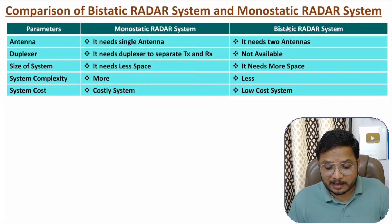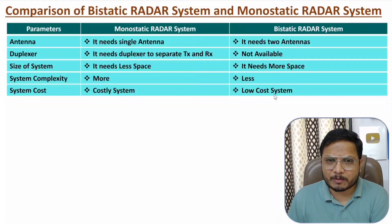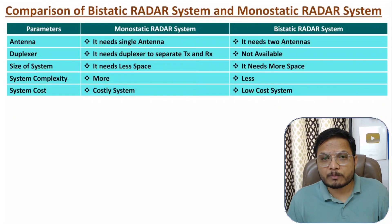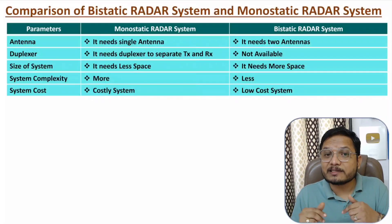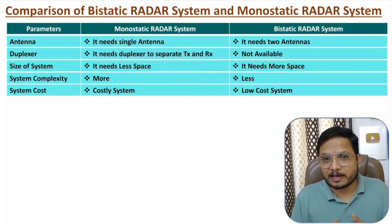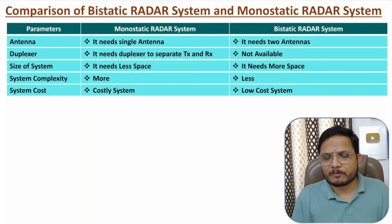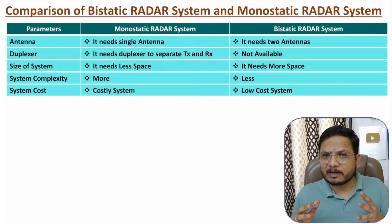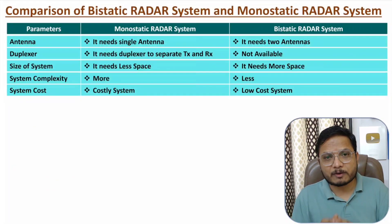Cost-wise, the monostatic radar system is costly and the bistatic radar system is a low-cost system. The antenna cost is not that high, but the use of a duplexer reduces size while increasing cost — the duplexer's cost is much greater compared to the cost of an antenna. I hope you have understood this session. If there is anything you'd like to share, please note it in the comment section — I'll be happy to help. Thank you so much for watching.